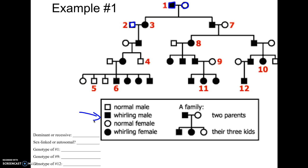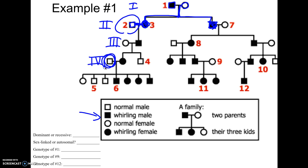They could tell you the trait is, say, autosomal recessive, and then ask you about different people in the tree. Or they could ask you to figure out what kind of trait it is based on how it's getting passed through the family. This downward line means that this is the child of these parents. Sometimes they'll also be numbers off to the side for the generations. People who are shaded have the trait; people who are not shaded don't.